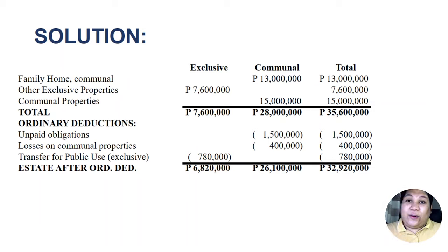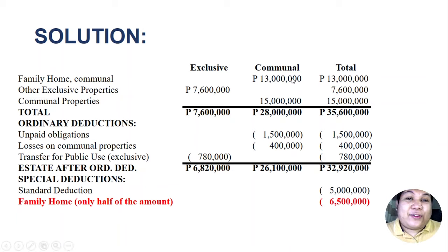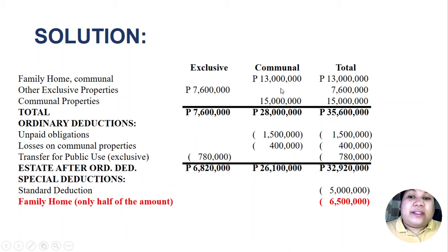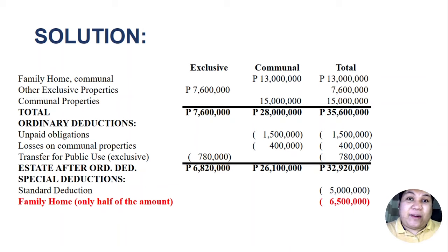After deducting ordinary deductions, we claim special deductions, starting with the standard deduction of 5,000,000. For the family home — now communal — since it is owned by both husband and wife, we divide the family home value by 2: 13,000,000 divided by 2 equals 6,500,000. We compare this 6,500,000 with the 10,000,000 maximum and select whichever is lower. Obviously, 6,500,000 is lower, so we claim 6,500,000 as the family home deduction.